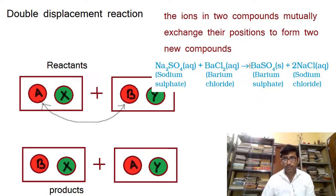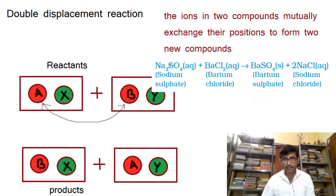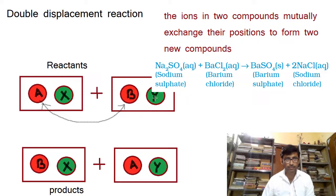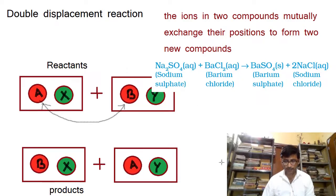We shall discuss in a later video the details of what a precipitate is and what such kinds of reactions are called. At present, we are dealing with this double displacement reaction, and this is an example of one. To summarize: it is a reaction in which the two ions in two separate compounds mutually exchange their positions to form two new products. We'll be back in another video to discuss the precipitation reaction in detail. Thank you.